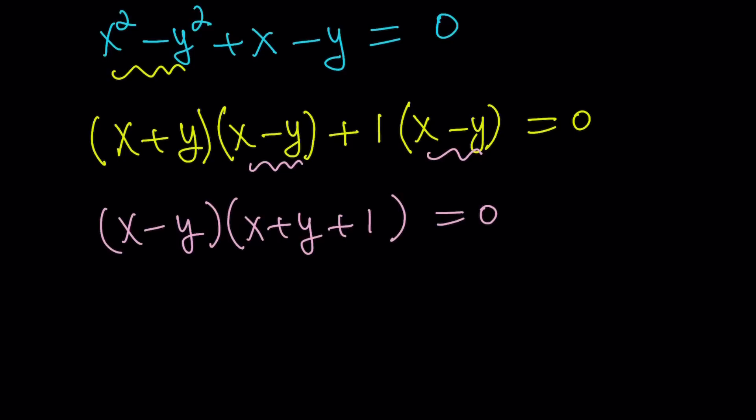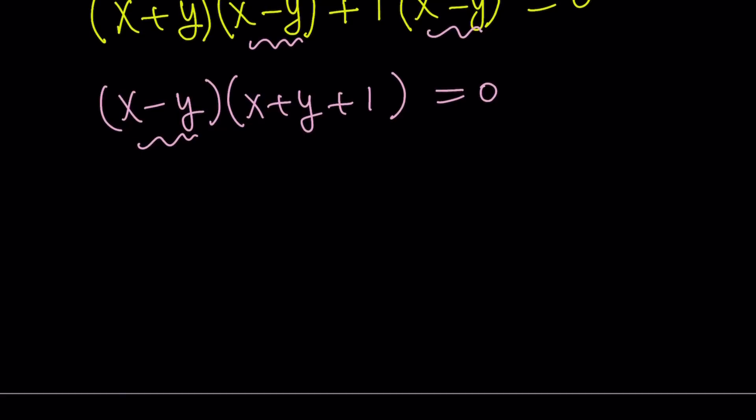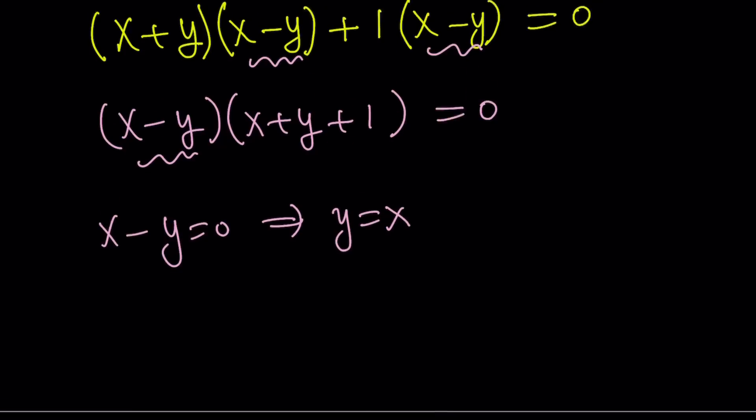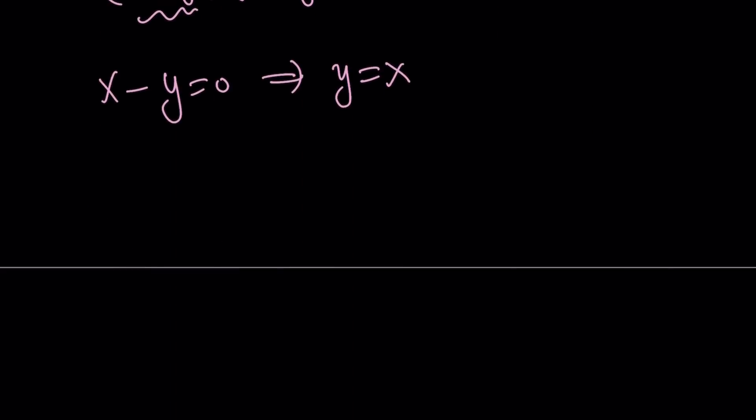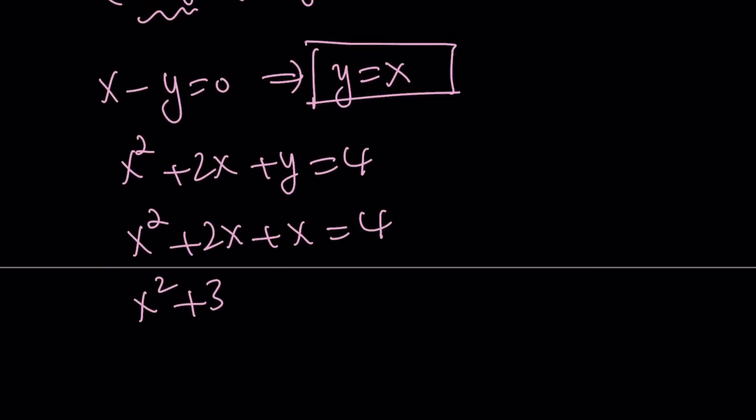I know this looks a little complicated, but we have two factors, and the product is 0. Therefore, we're going to set each factor equal to 0. Let's start with the easier one. y equals x, or x minus y equals 0. So x minus y equals 0 gives us y equals x, just like before. And now, remember, we can use this with one of the equations. I have x squared plus 2x plus y is equal to 4. And I'm going to use y equals x. Obviously, this is a lot simpler than the first method. x squared plus 2x plus y, which is x again, equals 4. This gives us x squared plus 3x.